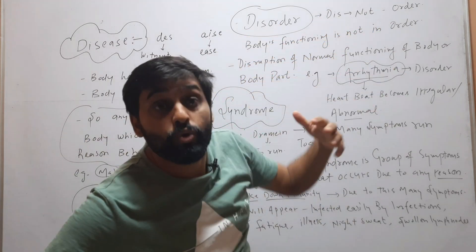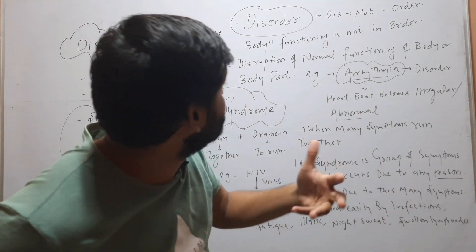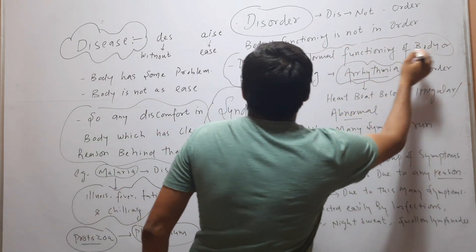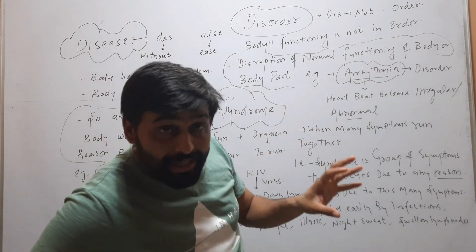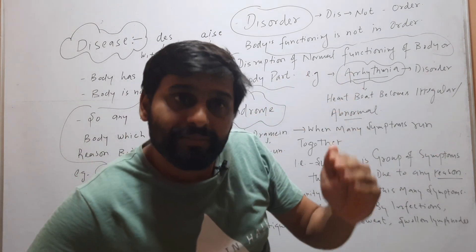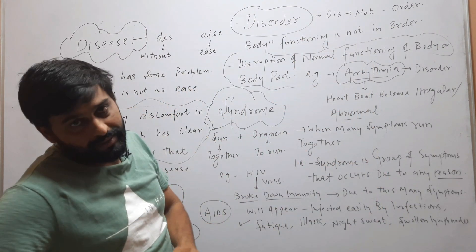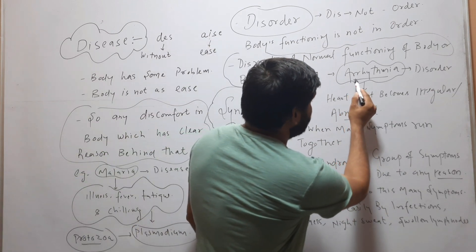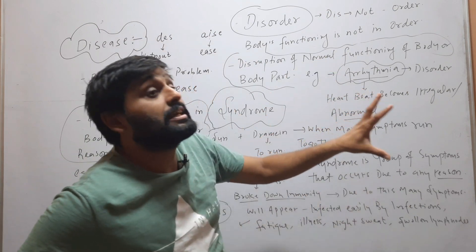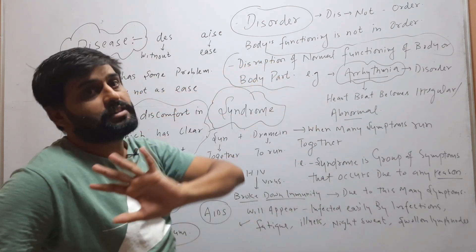'Dis' means not, 'order' means order — so disorder means not in order. When the body's functioning is not in order, that is called disorder. Disruption of normal functioning of the body or a body part is called disorder. Normally our heart beats regularly at a certain pace, but when there is a disorder — for example arrhythmia — the heartbeat becomes irregular or abnormal. So this is called disorder.